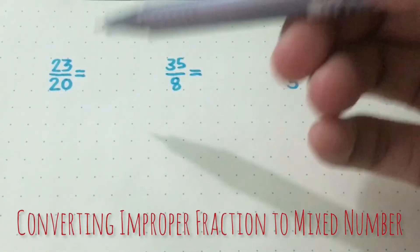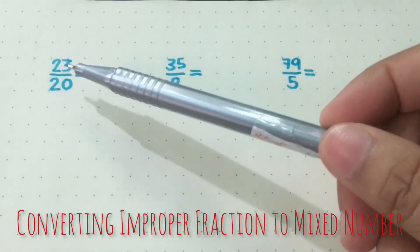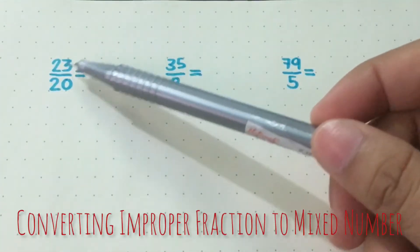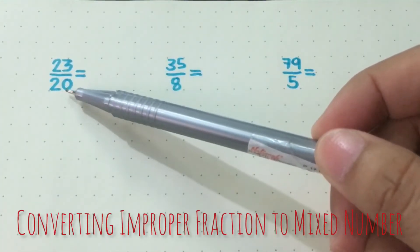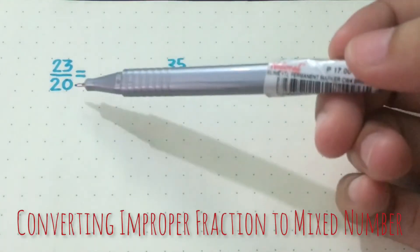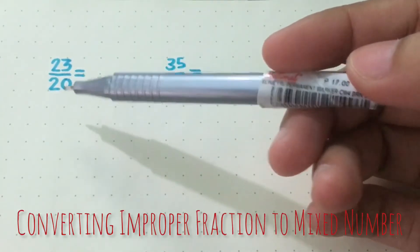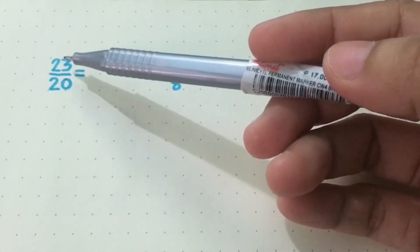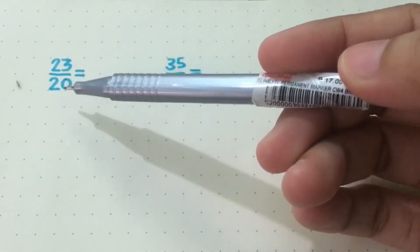Improper fractions are fractions where the numerator is higher or greater than the denominator. And to convert this into a mixed number, we may just divide the numerator by the denominator.